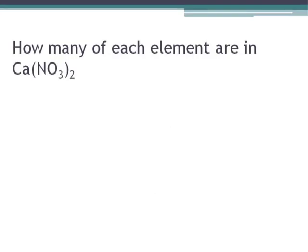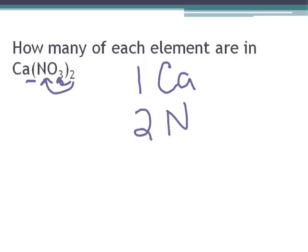So this one's a little bit trickier, but we'll start with the calcium. Since there's no little number, that means we have one calcium. And because we have this NO3 and we have it in brackets, that means we have to apply the two to both of our subscripts. Because there's no little number after nitrogen, that means we're going to do one times two, so we have two nitrogens. And we have to do three times two for our oxygens, so that means we have six oxygens.